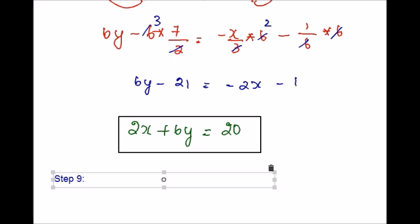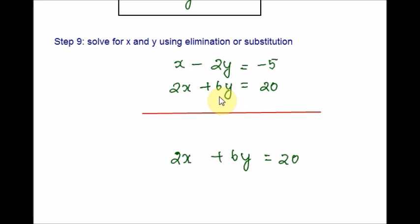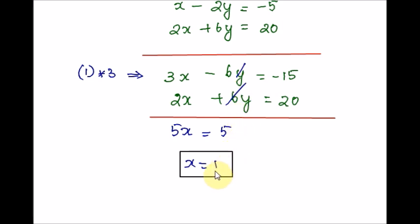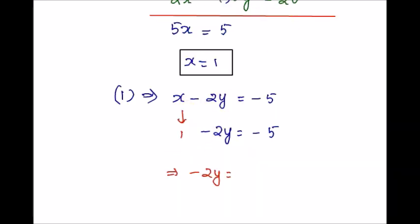Let us solve equations 1 and 2 to get the values for X and Y, which will be our center. You can use elimination or substitution, whichever you are comfortable with. To make the coefficients of Y the same, multiply equation 1 by 3 so that 2Y becomes 6Y. Add the equations so Y is eliminated. Dividing both sides by 5 gives X equals 1. Substituting back into equation 1 and solving gives the Y value. Yes, we have the center: (1, 3).